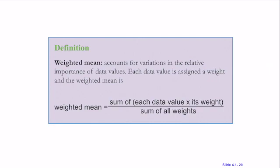The next thing I'd like to talk about is weighted mean. Weighted means account for variations in the relative importance of data value. Each data value is assigned a weight. The weighted mean is then the sum of each data value times its weight over the sum of all weights. The weight could really just be the number of times a data value occurs. Let's look at an example.